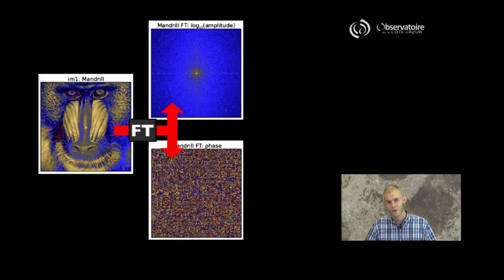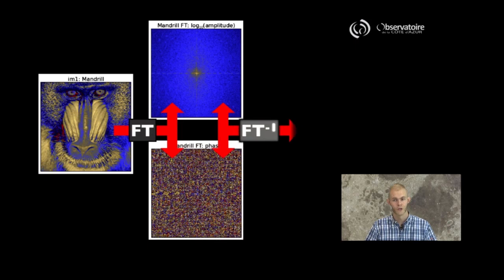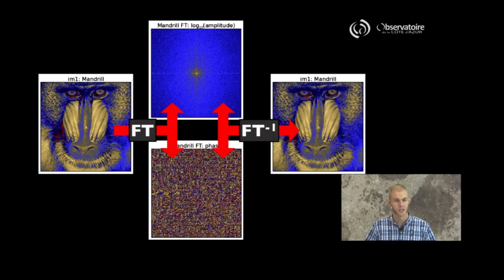Now we know that the Fourier transform is a reversible operation, which means that if we were to take the inverse Fourier transform of these two things together, we would of course recover the original object itself.